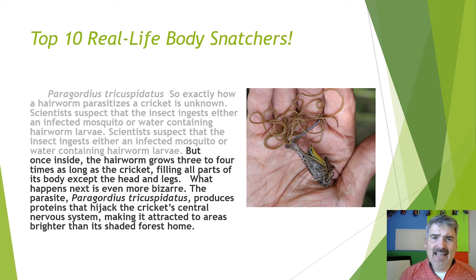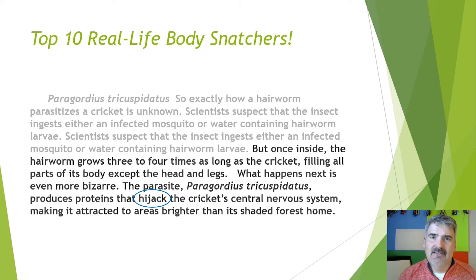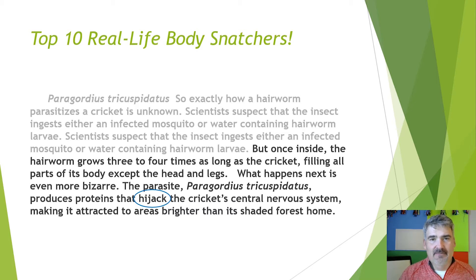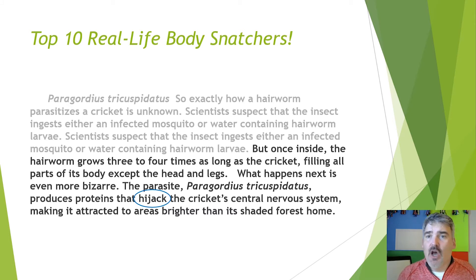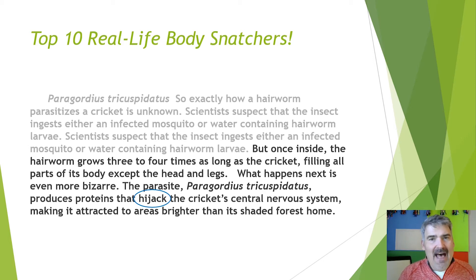Notice how the author says 'exactly how a hair worm parasitizes a cricket is unknown.' That word parasitizes is unusual and not used very often. Based on what we have discussed about the word parasite, take a moment and write on your paper what you think the word 'parasitizes' means in the context of the text. Take about 30 seconds. The word parasitizes is of course very similar to the word parasite. The author is taking the noun parasite and using it in its verb form — parasitize — to indicate that the hair worm is acting upon the cricket in a way that a parasite does, to take advantage of it.